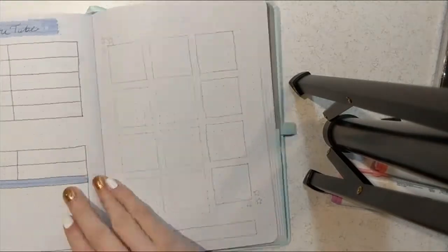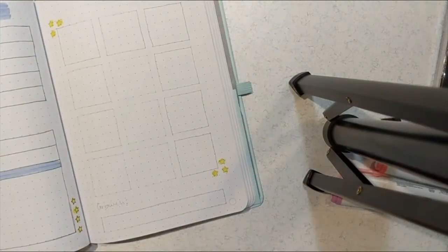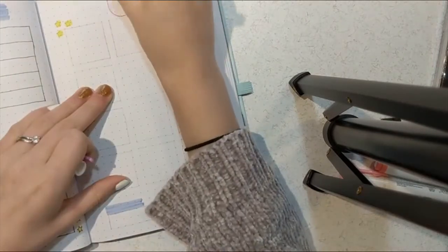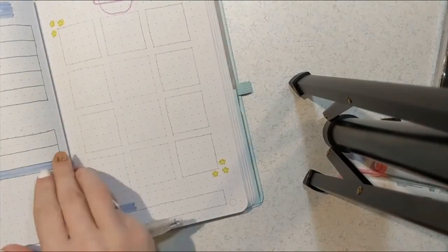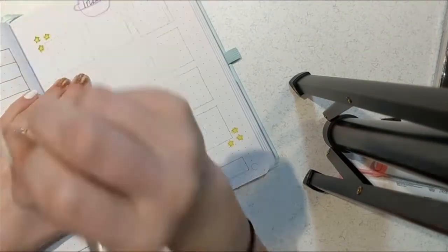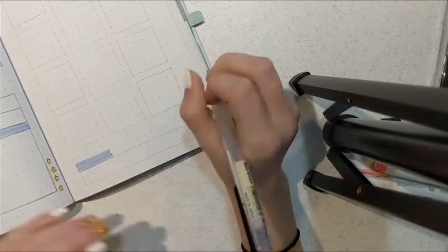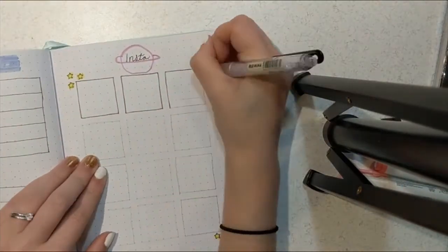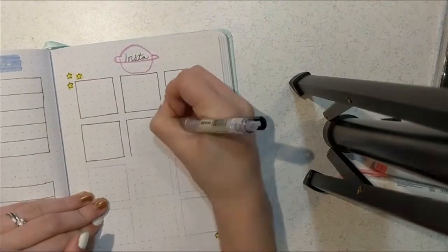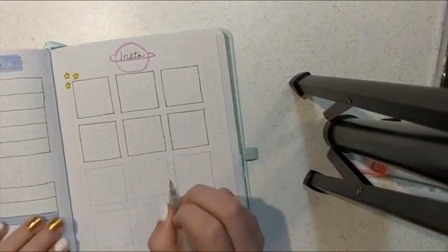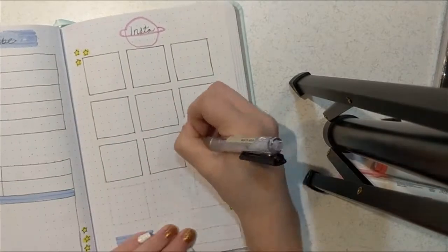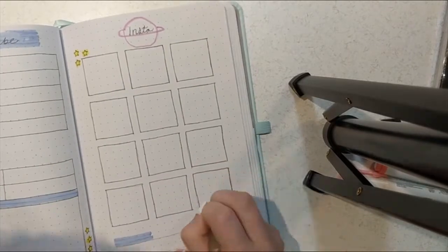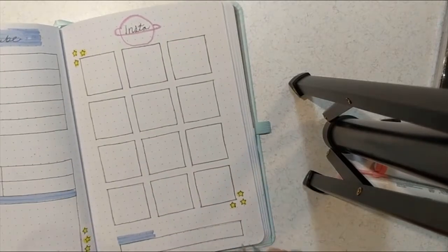Same thing with Instagram. I post three posts per week on average, or at least I am trying to. So here I am just keeping track of what kind of posts I am doing so that I can have a variety and I am posting good quality content as well. Again, I kept the stars pretty minimalistic, brought back a planet and I thought that was quite fun.